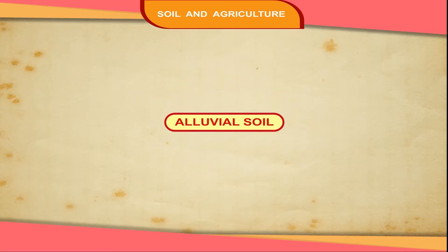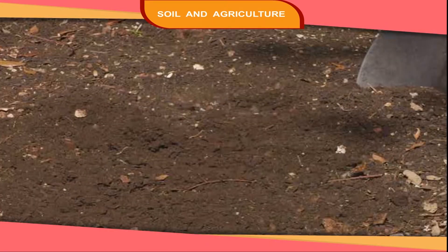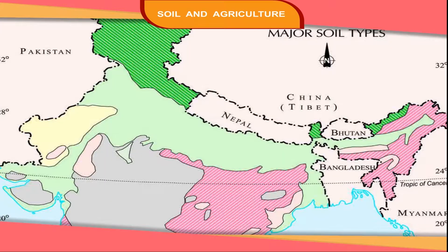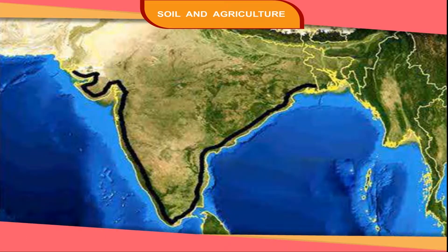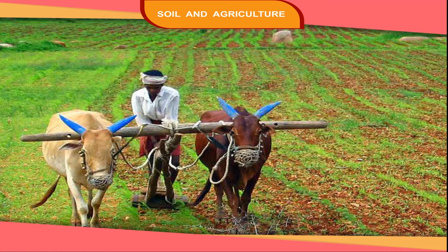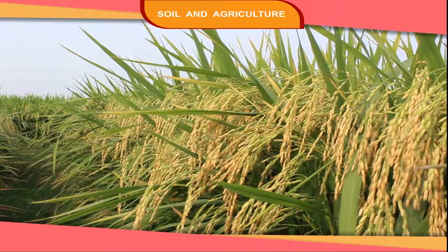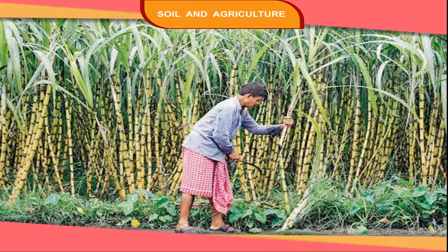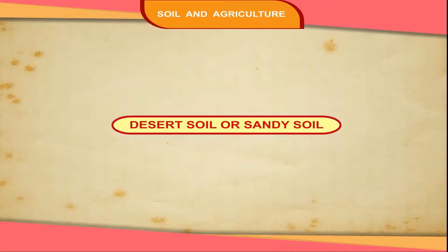Alluvial soil is found mainly in the northern plains and in the coastal plains. It is made up of alluvium brought by rivers. Alluvial soil is very fertile and gives rich crops of paddy, wheat, sugarcane, jute and oilseeds.